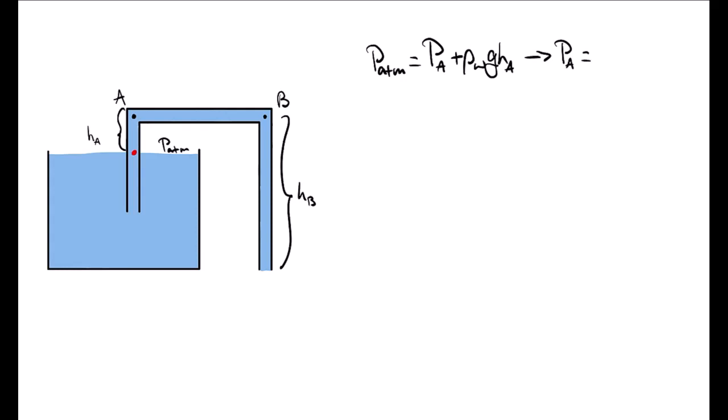Solving for the pressure at point A, we will find that P_A is going to be equal to the atmospheric pressure minus rho G H.